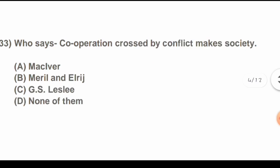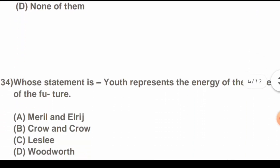Question 33: Who says cooperation crossed by conflict makes society? Options are: A) MacIver, B) Merrill and Irish, C) G.S. Leslie, D) None of them. The correct answer is B) Merrill and Irish.